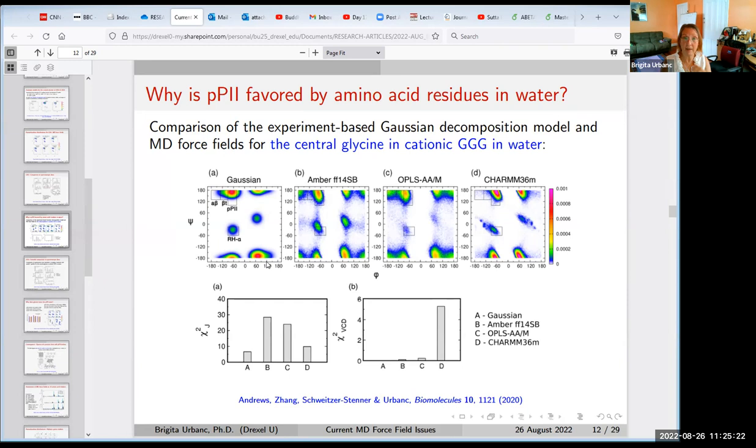Of course, because it can form a right-handed and left-handed conformation, it is more flexible than alanine, for example, but it has significant amount of PP2 conformation. And so then the question was, why is that? So why is the backbone so important?